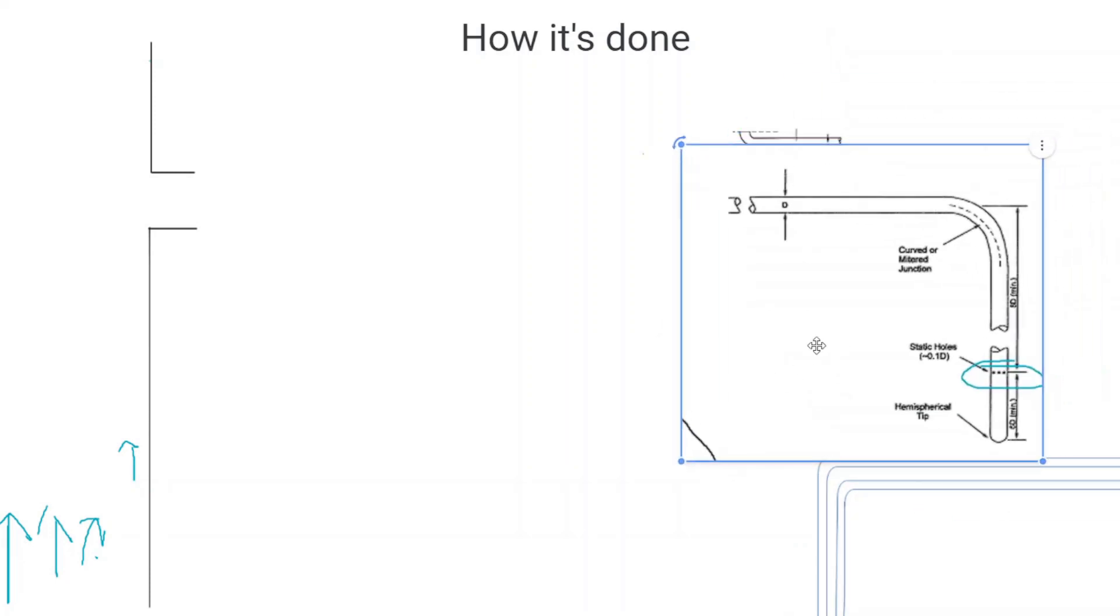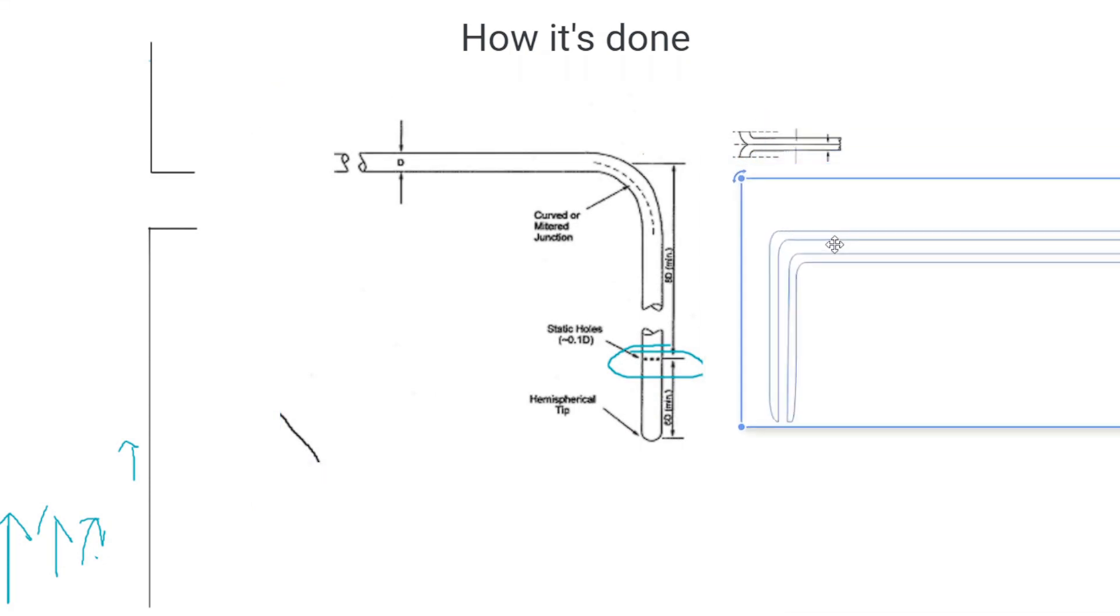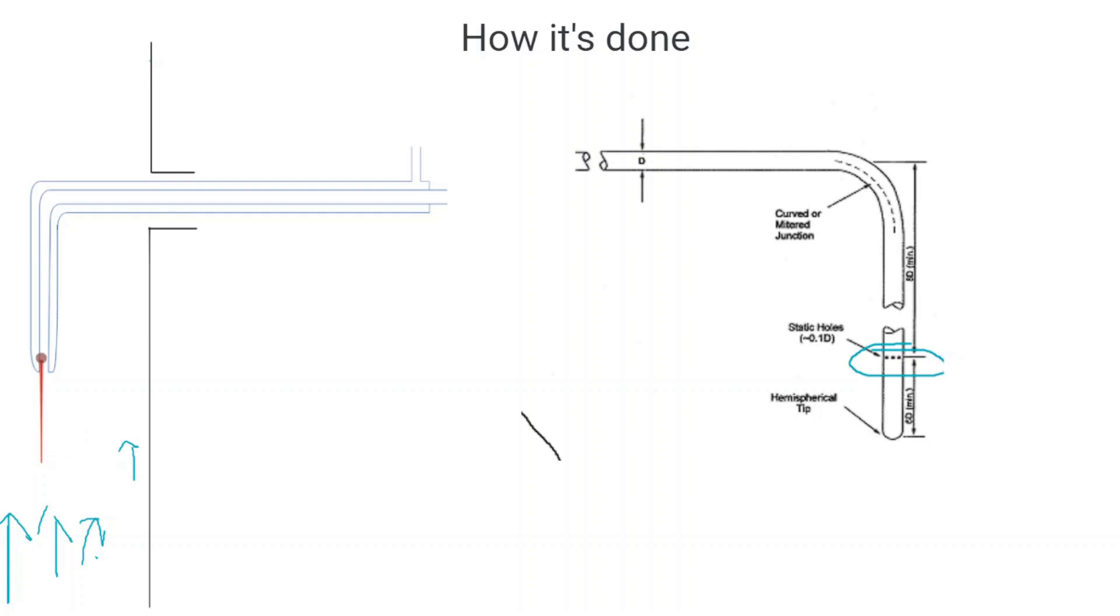Now what does all this mean and how is it done? This is a type 1 pitot tube. This is just the other side of the type 1 pitot tube. How the type 1 works it has a single channel tube that's open throughout the middle and it has an outer sleeve.